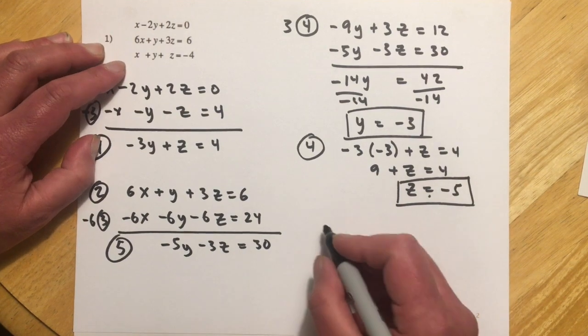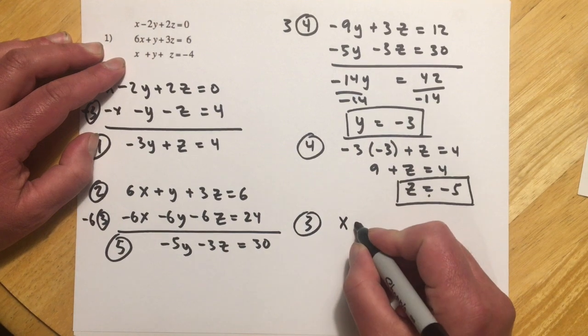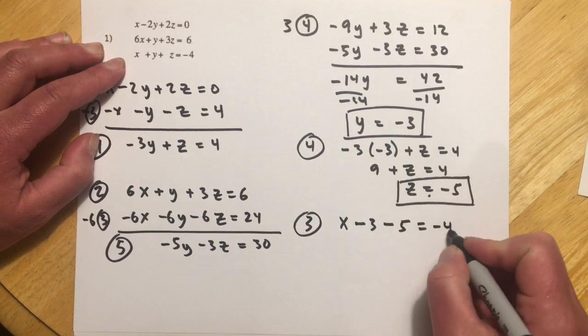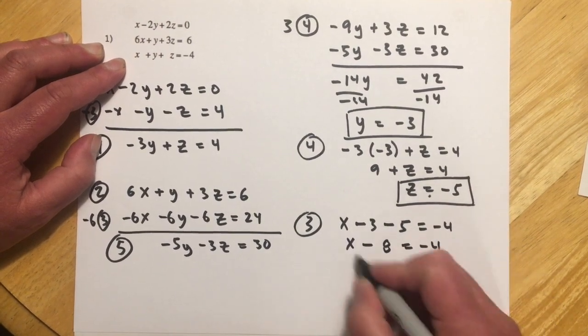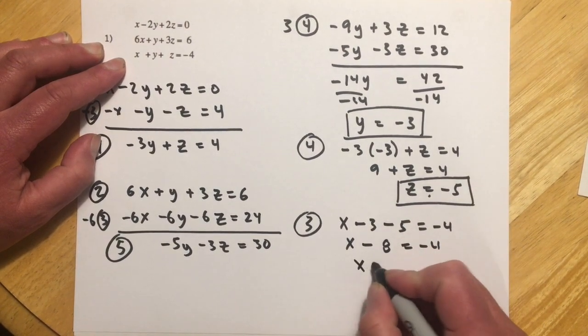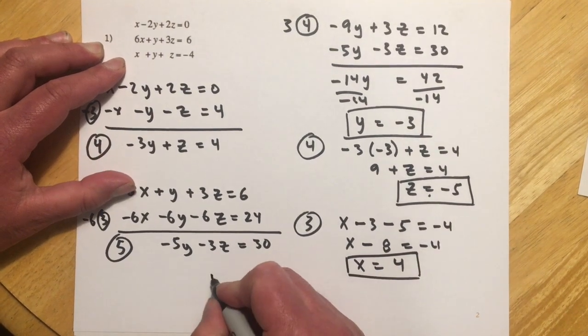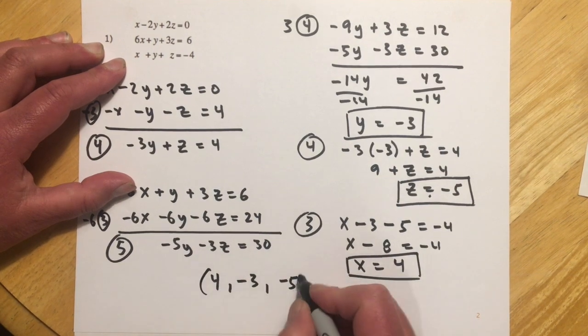And it looks like equation three looks easiest, so I'm going to use that. So x minus 3 minus 5 equals negative 4. So x minus 8 makes negative 4. Adding that over, x equals 4. So my solution set's going to be 4, negative 3, negative 5.